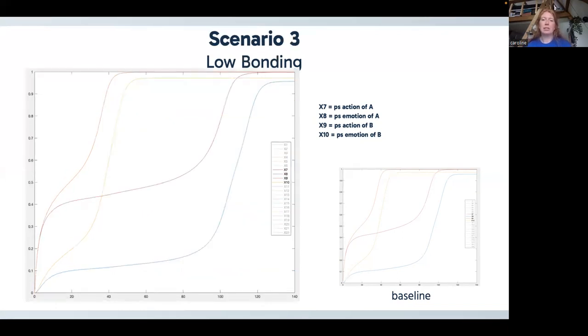Then we have our scenario three with the low bonding. If we compare this with the baseline, we can see that there aren't as clear results as with the scenario with low learning. But we do see that the decision for agent A comes a little bit later than it would in the baseline example.